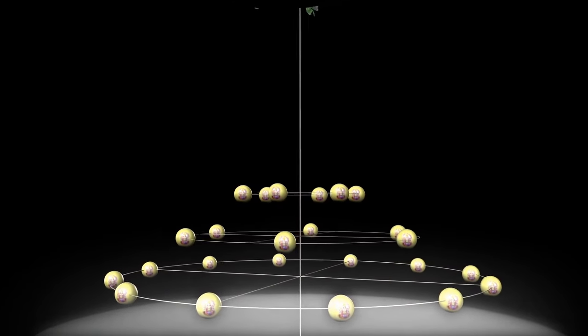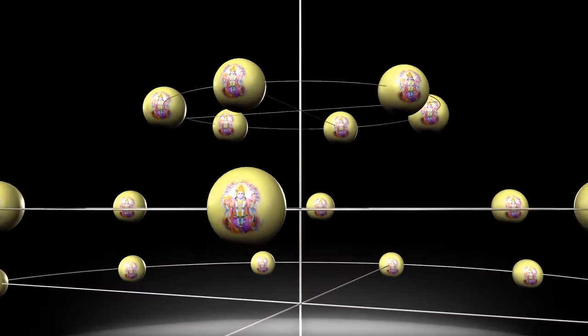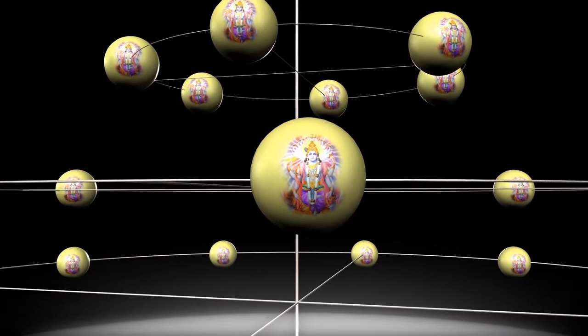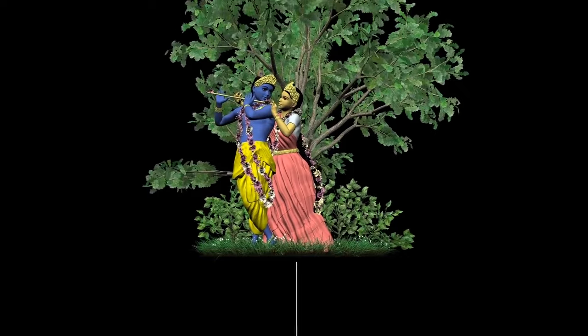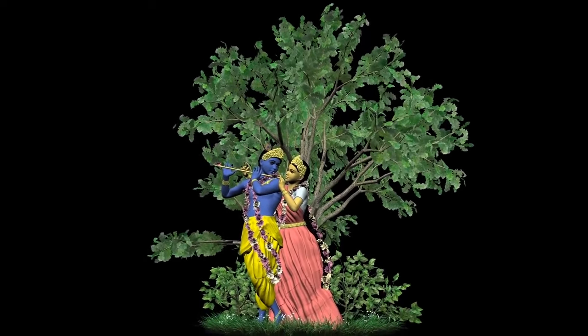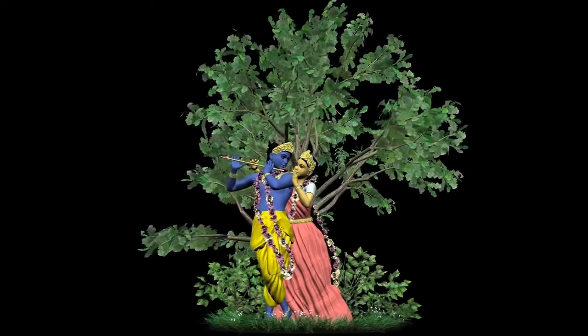Then we come to Goloka Vrindavan. Here we can see Radha Madhava. But we'll also be showing the other primary rasas. Krishna with the cowherd boys, Krishna being served, Krishna with Mother Yashoda. So this is an overview of the planetary display to be shown in the main dome of the temple.